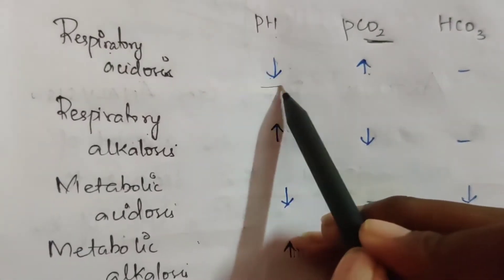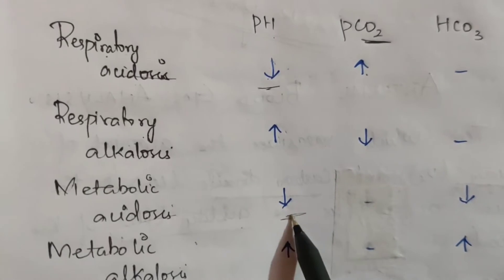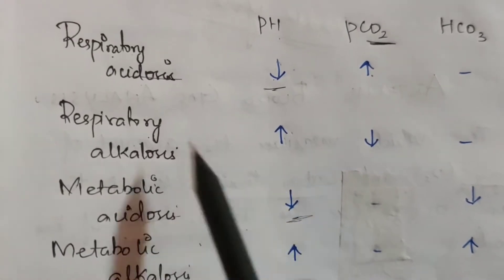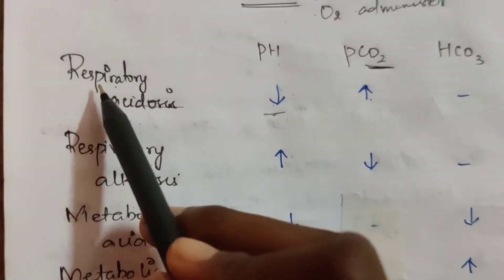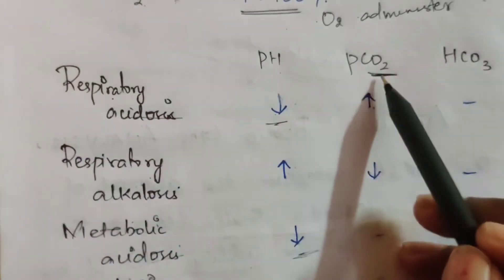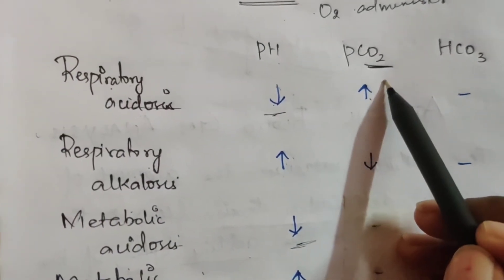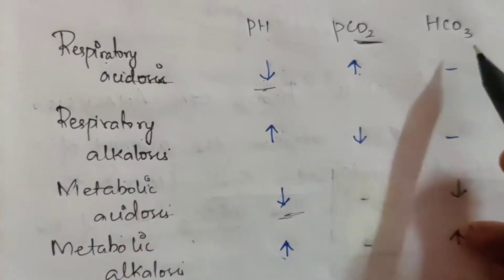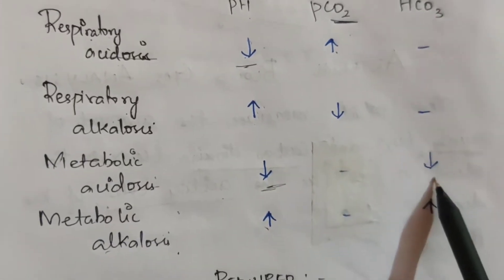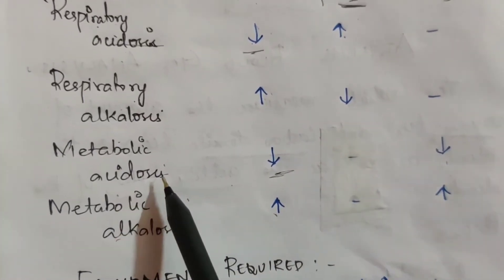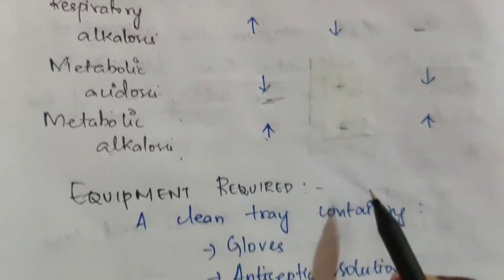In acidosis, pH value is decreased. In alkalosis, pH value is increased. Respiratory disorders are based on PCO2 or CO2 levels, while metabolic disorders are based on bicarbonate levels.